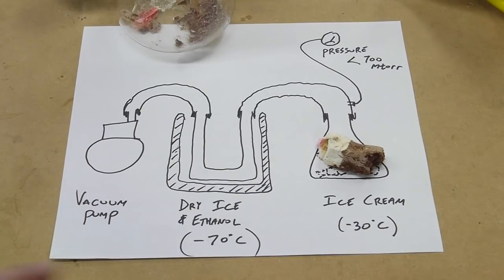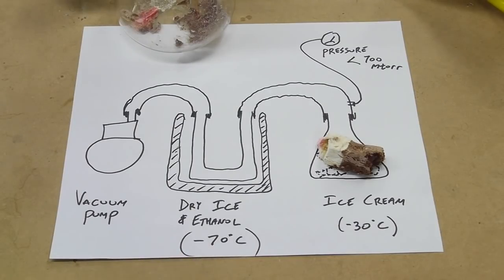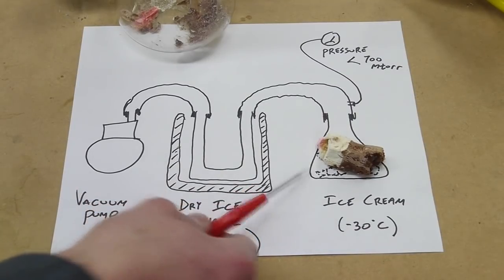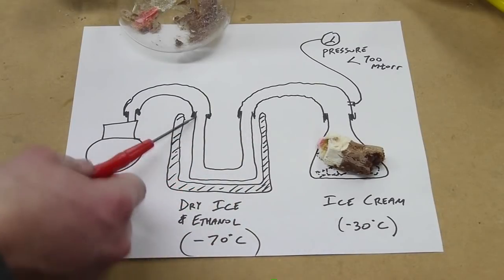So this is how a freeze dryer is basically built. We have the chamber here, where you put your food, and then this is called a cold trap.